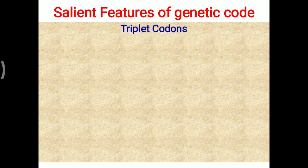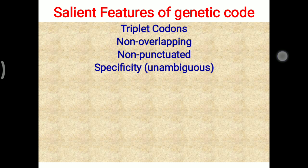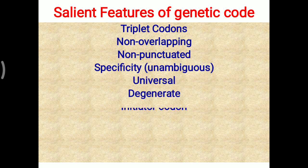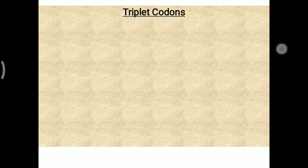The key features of the genetic codon are: they are triplet codons, non-overlapping, non-punctuated, and specific — hence called unambiguous. They are universal, degeneracy is observed, there are particular initiator codons and terminator codons, and lastly the most important feature is the wobbling phenomenon.